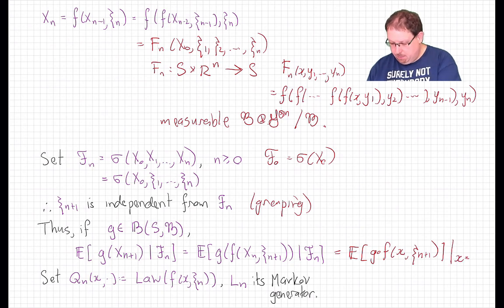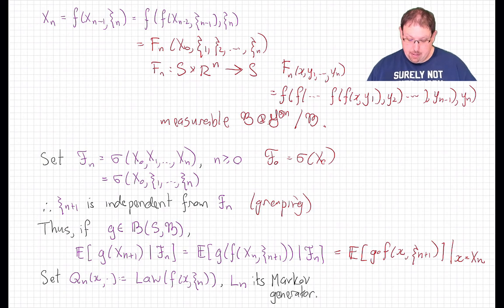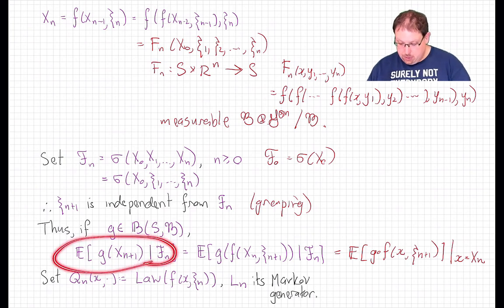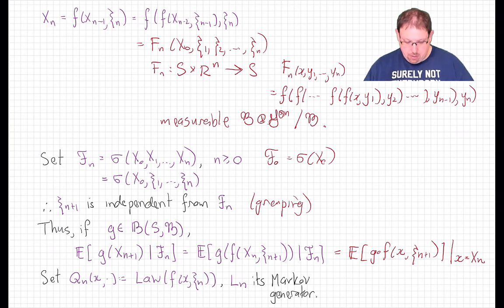And we evaluate that number at little x equals capital X_n. That's how we evaluate the conditional expectation here. And in particular, we know that that means that this is a function of X_n.